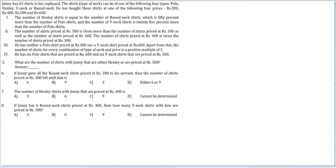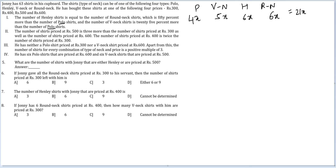The number of Henley shirts equals the number of round neck shirts, which is 50% more than the number of polo shirts. The number of V-neck shirts is 25% more than that of polo shirts. So polo shirts are the hero. Let polo shirts be 4X, then V-neck shirts are 5X, and Henley and round neck shirts are 6X each. Altogether that gives 21X, and 21X equals 63, meaning there are 12 polo shirts, 15 V-neck shirts, 18 Henley shirts, and 18 round neck shirts.